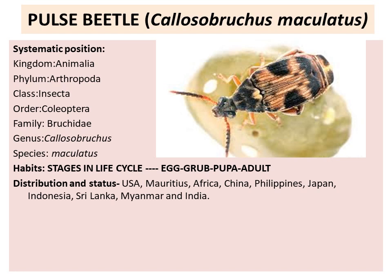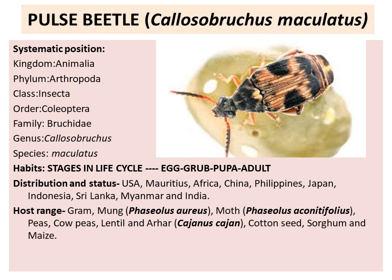Host range: It infests peas, cow peas, lentil, arhar, cotton seed, sorghum, and maize.